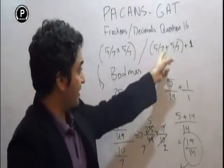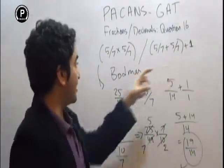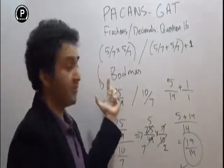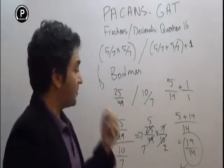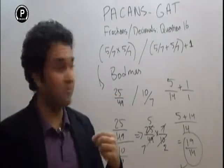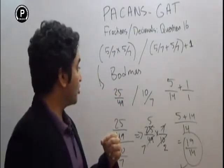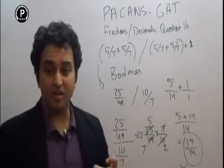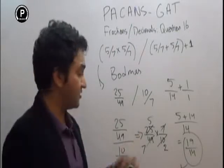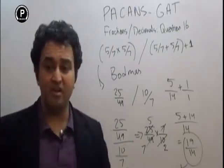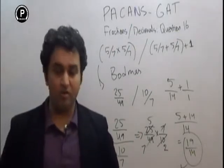And when we add 5 over 14, we add it last because first we have to divide, then multiply, then add and subtract. So it is not subtraction — the answer is going to be 19 over 14.